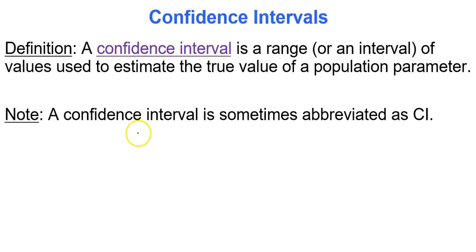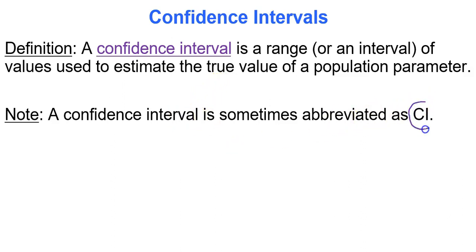Our confidence interval starts with a sample proportion as a point estimate. A confidence interval is a range or interval of values used to estimate the true value of a population parameter. The confidence interval is sometimes abbreviated with the letters CI.